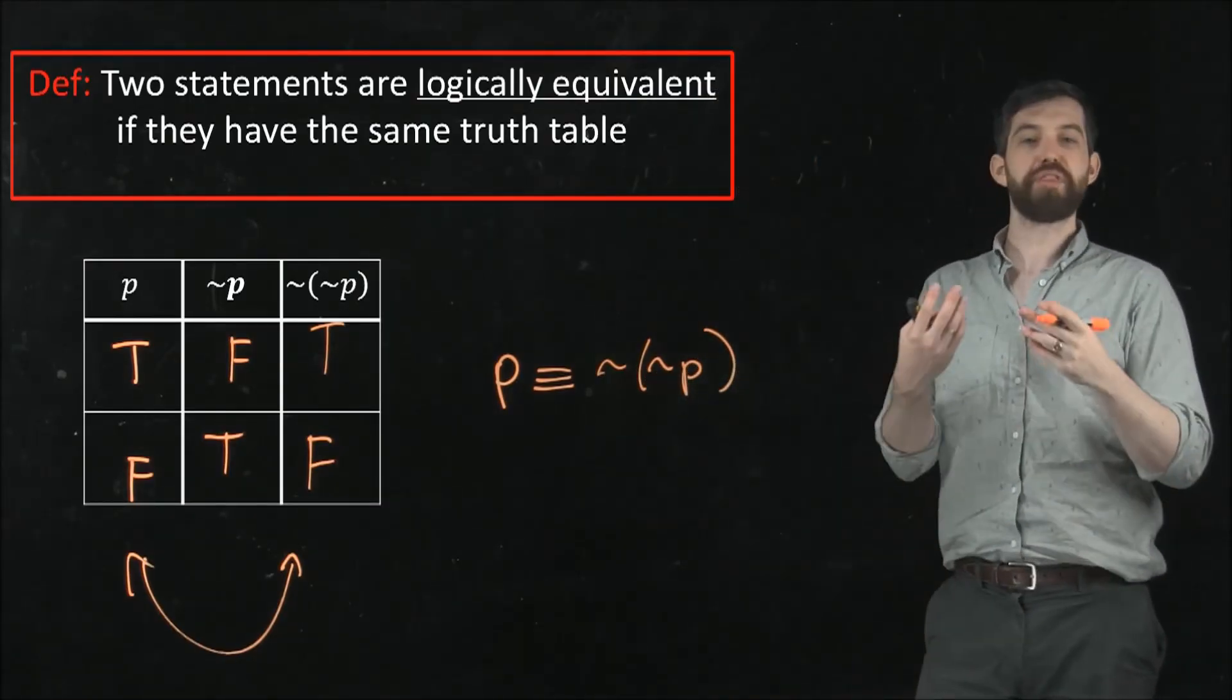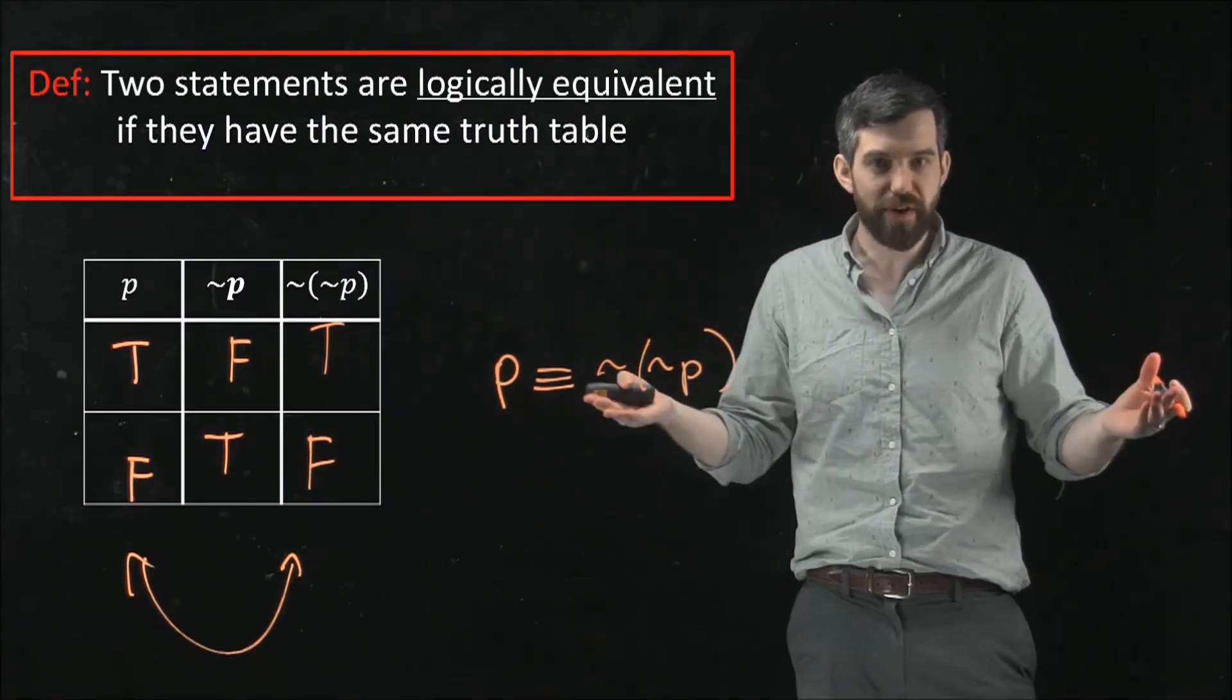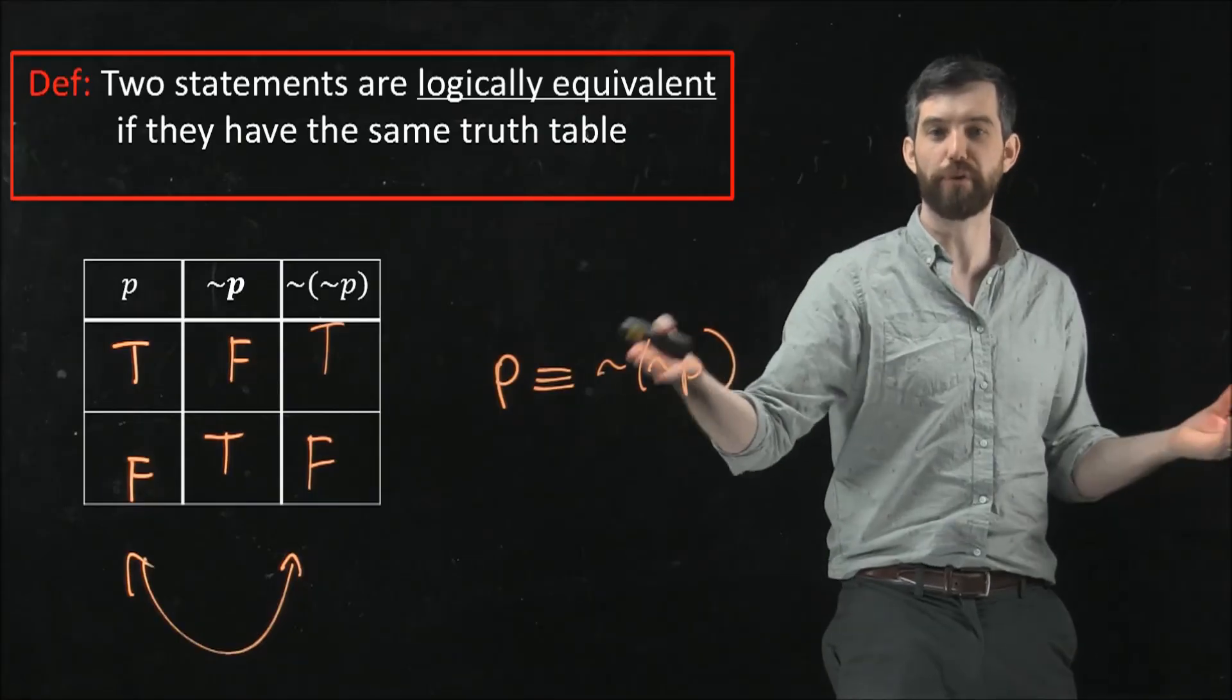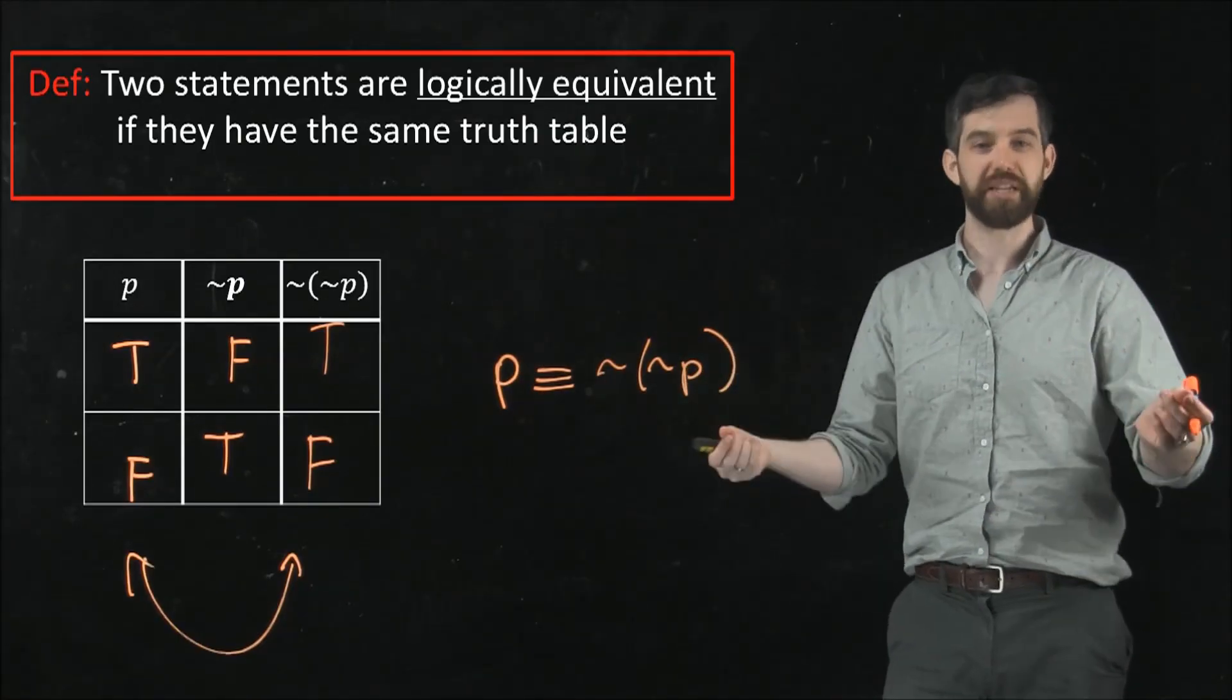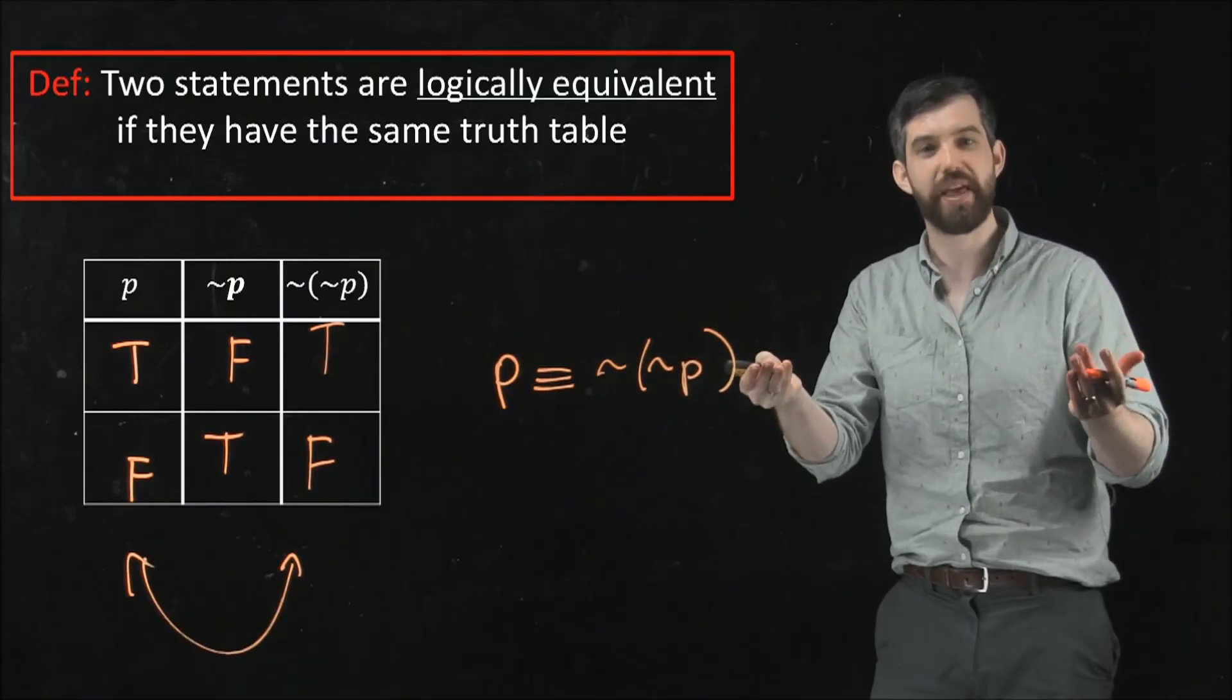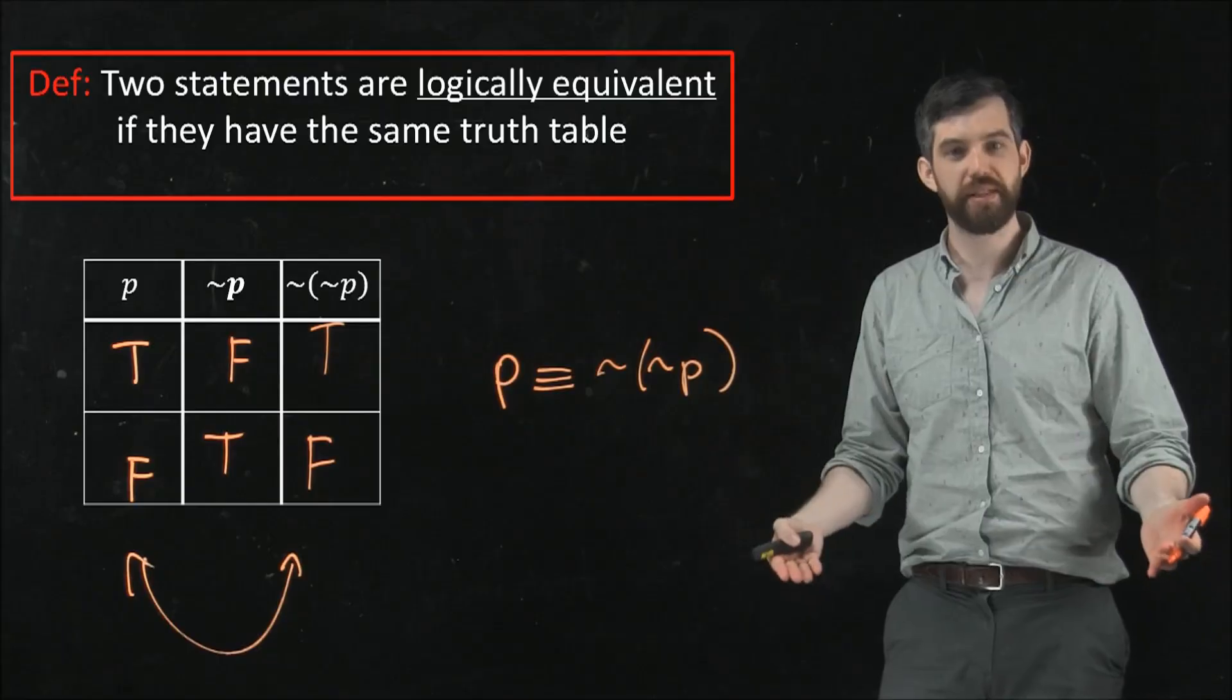And it's going to turn out that there's all sorts of different logical forms that may appear to be very different. Like not not p superficially is written in a different way than p. But even though it's superficially different, they truly are the same thing. And our method is just write out the truth tables for both of them. Are they the same truth table or are they different?